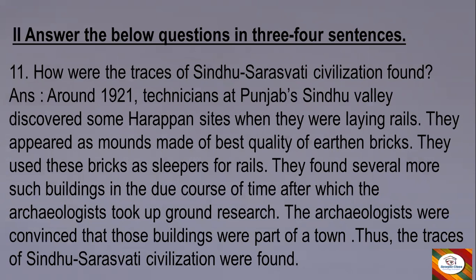Now we have the second main section: answer the following questions in three to four sentences. Question 11: How were the traces of Sindhu Saraswati civilization found? Answer: Around 1921, technicians at Punjab's Sindhu Valley discovered some Harappan sites when they were laying rails. They appeared as mounds made of best quality earthen bricks, and they used these bricks as sleepers for rails. They found several more such buildings in due course of time, after which archaeologists took up ground research and were convinced those buildings were part of a town. Thus, the traces of Sindhu Saraswati civilization were found.